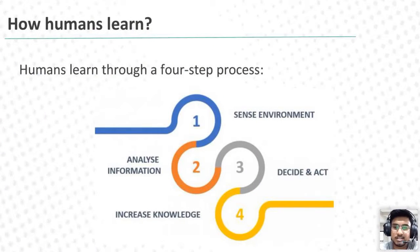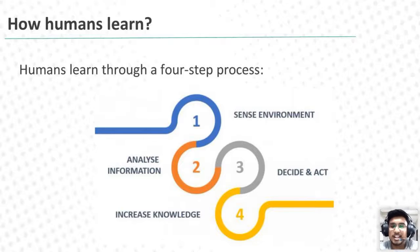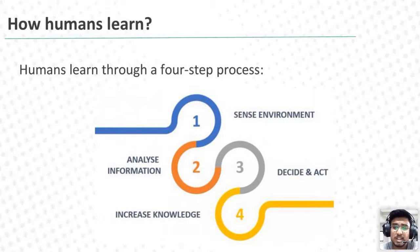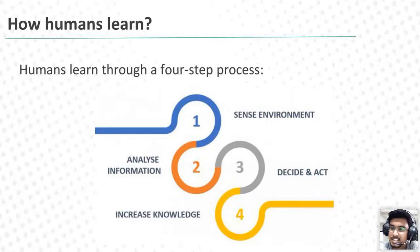How do humans learn? We are all humans, and how we actually learn is a very tricky question. Basically, humans learn through four steps. First is sense environment. Second is analyze information. Third is decide and act. And fourth is increase the knowledge. Let's look at what exactly these four steps mean.